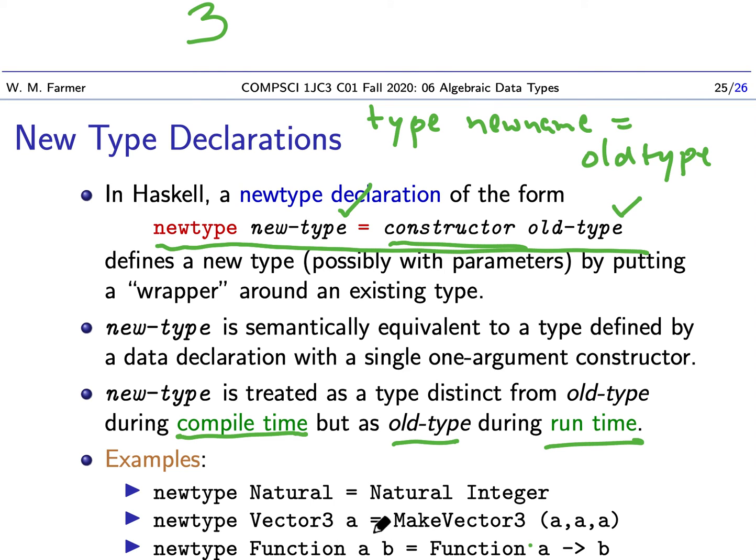So that means when we're doing type checking, when we're seeing if our code fits together right, we're going to use natural. But once we know it all fits together right, natural will be treated just like it's an integer. Just like it's an integer type. So we get convenience by having a new type natural, but we don't lose efficiency because when we actually compute with it, we use integer.